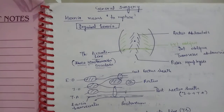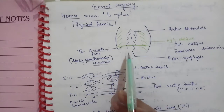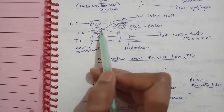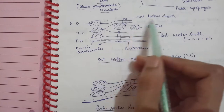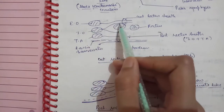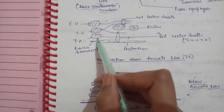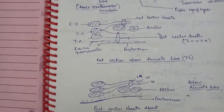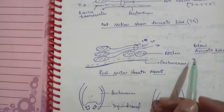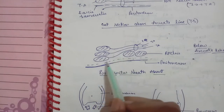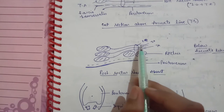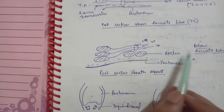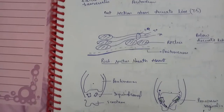We will study the rectus sheath in two ways: above the arcuate line and below. Above the arcuate line, the anterior rectus sheath is the external oblique. The posterior rectus sheath is the internal oblique, transversus abdominis, and fascia transversalis. Below the arcuate line, the posterior rectus sheath is absent because all muscles converge anteriorly. So below the arcuate line, the anterior rectus sheath is formed by the external oblique, internal oblique, and transversus abdominis.